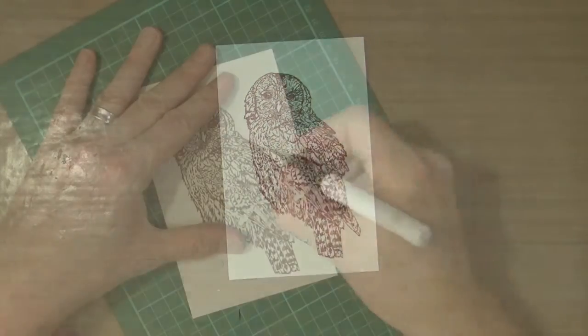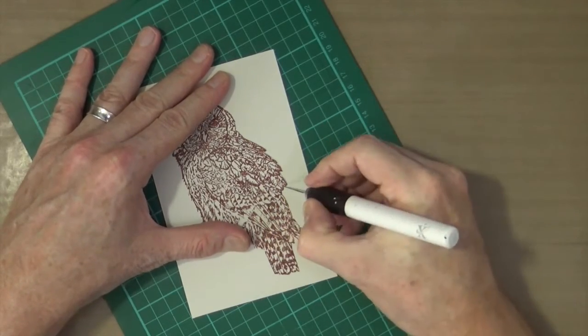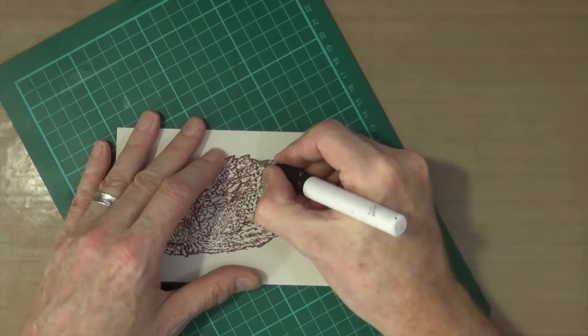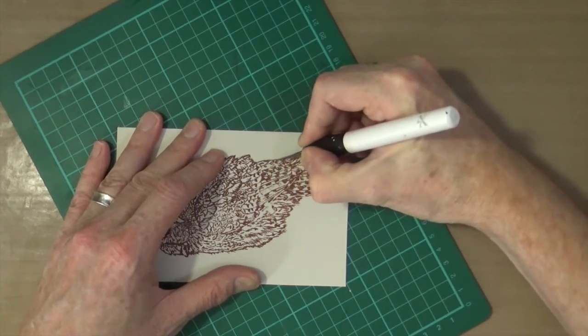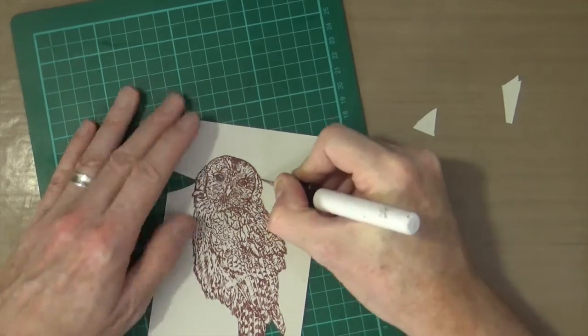Perfect impression. Now using my craft knife, I'm going to cut the entire owl out. Obviously I'm not going to make you sit through the whole process, so I'll just jump to the end where I finish cutting it out.